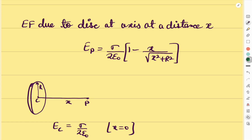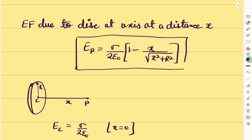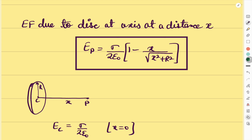As we know, the electric field due to a disk of radius R at a distance x is given by a specific formula. You can see the formula here: the electric field at point P due to this disk, where sigma is the surface charge density, at axial distance x is E = σ/(2ε₀) · [1 − x/√(x² + R²)].